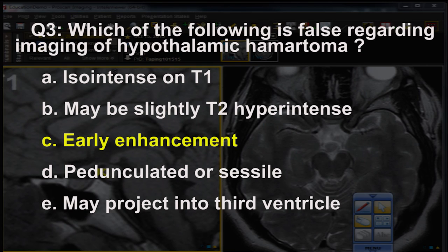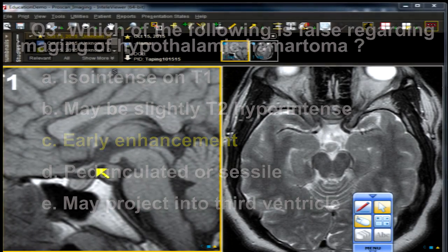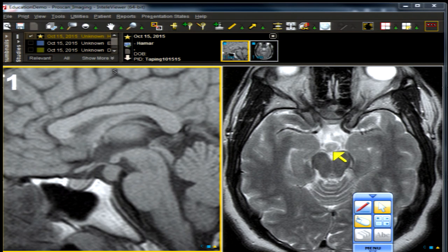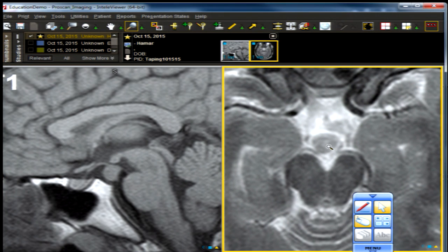There is the infundibular stalk, there is the mammillary body, and there is the characteristic location between those two structures. Question three: which of the following is false regarding imaging of hypothalamic hamartoma? The answer is C — early enhancement. Enhancement is not a feature of any hamartoma, essentially anywhere in the body. Because these lesions are close in character to gray matter, they are iso-intense with gray matter on T1 and may be slightly hyper-intense or iso-intense on T2.